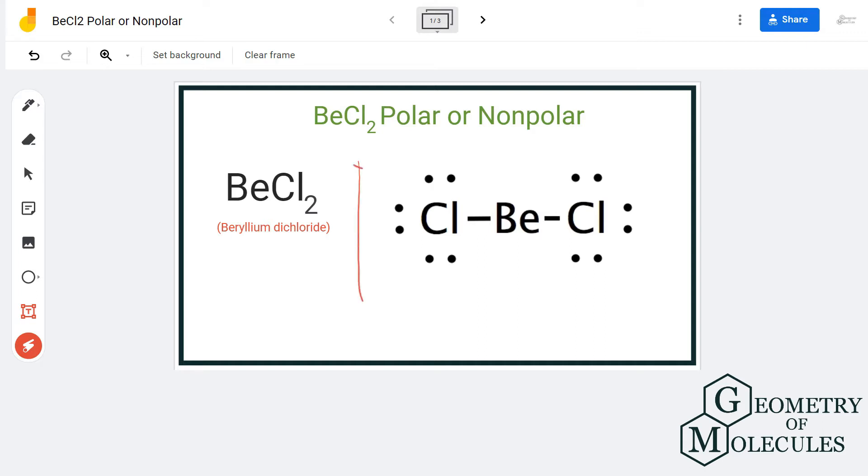This is the Lewis structure of BeCl2, in which beryllium atom is forming a single bond with both chlorine atoms. It is a linear molecule with a bond angle of 180 degrees. Even if there are dipole moments in this molecule, they will be cancelled out due to the symmetric distribution of atoms.